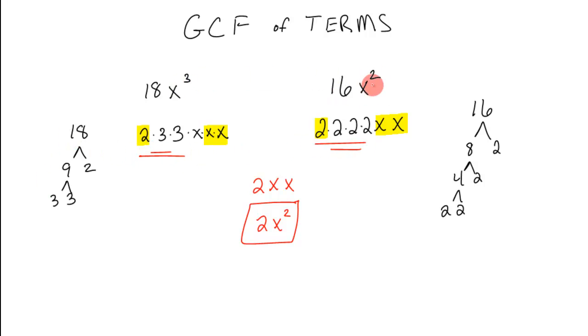But the variables are pretty easy. x squared means there are x times x, and x cubed means there are x times x times x. So there are two x's. It's always the smaller amount that is in common.